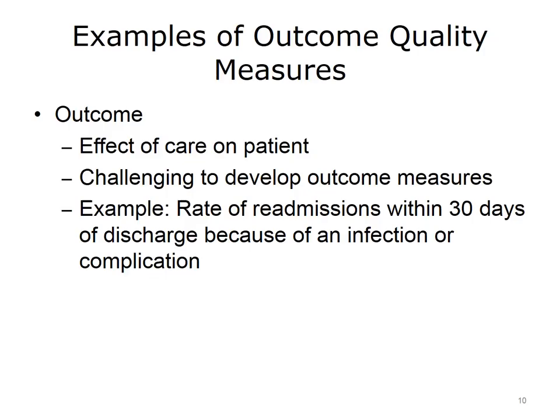Outcome measures are often understood to be the most important gauge of quality, as they evaluate a patient's health as a result of the care they received. Outcome measures tend to look at the intended or unintended consequences or effects that care has on the patient. Developing meaningful outcome measures can be challenging, as they are complex in nature and often require a wealth of detailed information and staff members to analyze the patient population. To determine the rate of readmissions because of an infection, we would have to know who has been readmitted within a specific timeframe, the reason why the patients were initially hospitalized, and why they were readmitted.